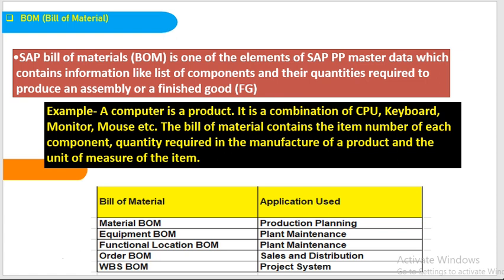For example, take a computer. A computer is a finished product — it is a combination of CPU, keyboard, monitor and mouse. Without these we cannot call it a computer. These assemblies are included in the finished product. The bill of material contains the item number of each component, the quantity required in manufacturing, and the unit of measurement. It represents what quantity is required and what assemblies need to be added.